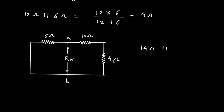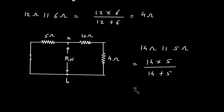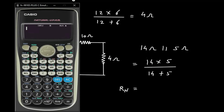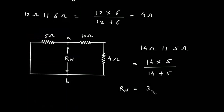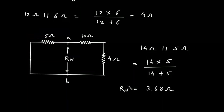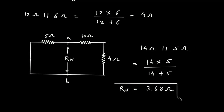Now, the 14 ohm is in parallel with this 5 ohm. So this will be 14 into 5 divided by 14 plus 5. Therefore, Rn is equal to 14 into 5 divided by 14 plus 5, which gives 3.68 ohm. So 3.68 ohm is the value for Rn.